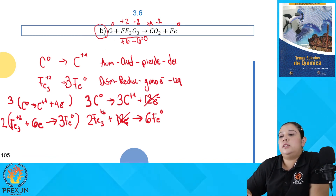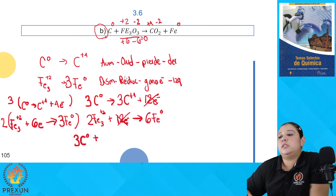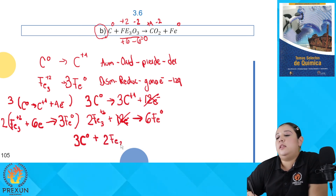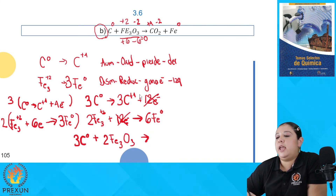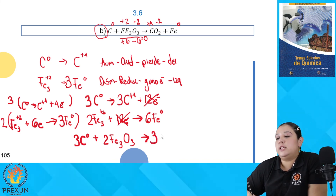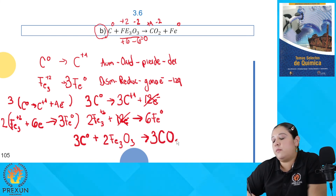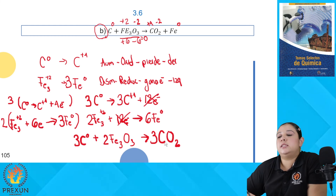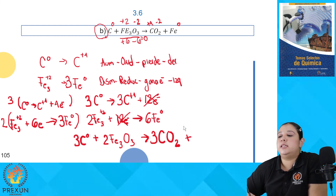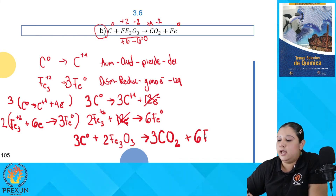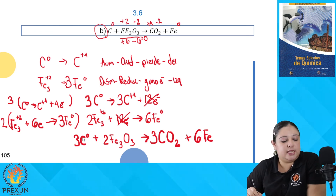Con los coeficientes obtenidos de las semirreacciones, vamos a colocarlos en la reacción química. Necesitamos 3 carbonos, coeficiente 3 al reactivo C. Necesitamos 2 unidades de Fe₂O₃, coeficiente 2. En los productos necesitamos 3 dióxidos de carbono, coeficiente 3 al CO₂. Y obtenemos 6 hierros, coeficiente 6 al Fe. Ya tenemos los coeficientes necesarios.